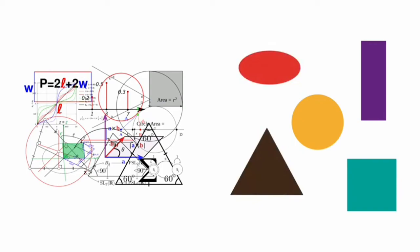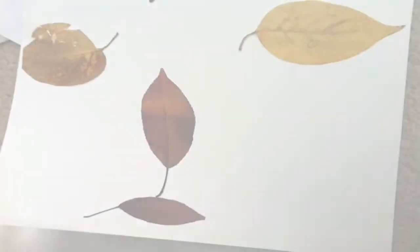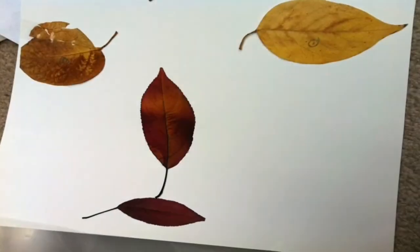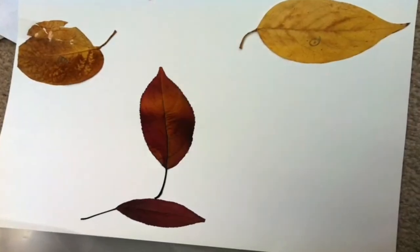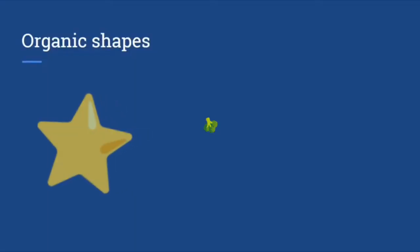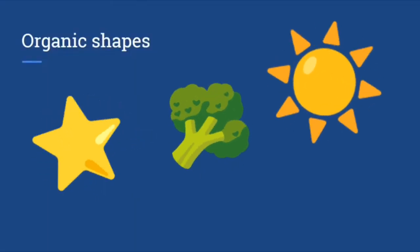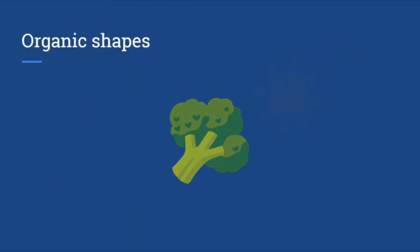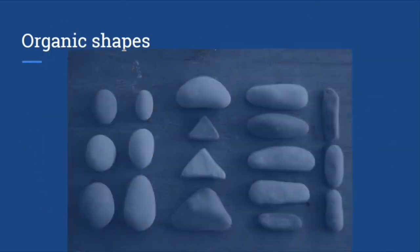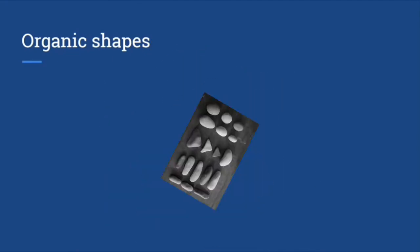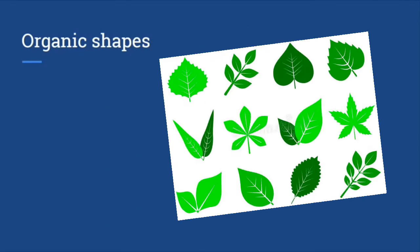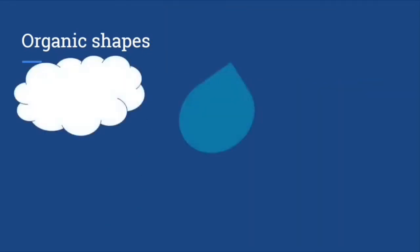Geometric shapes don't often appear in nature. The opposite of geometric shape is organic shape. Organic shapes are shapes we see in nature — they are natural, free-flowing shapes. These shapes are irregular and not definite.